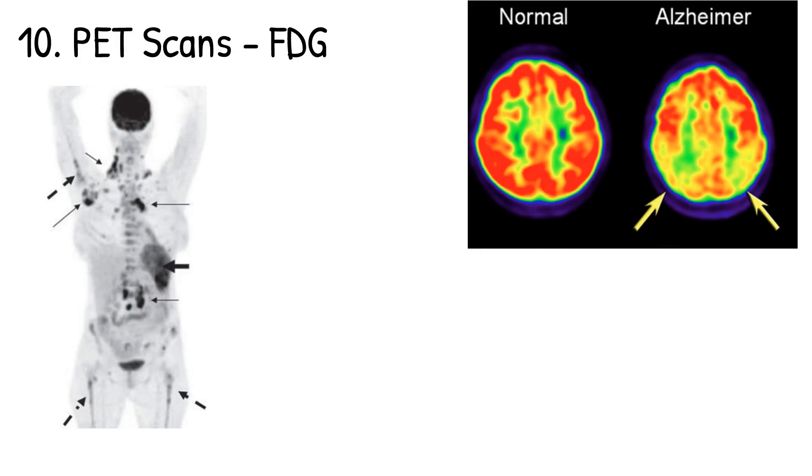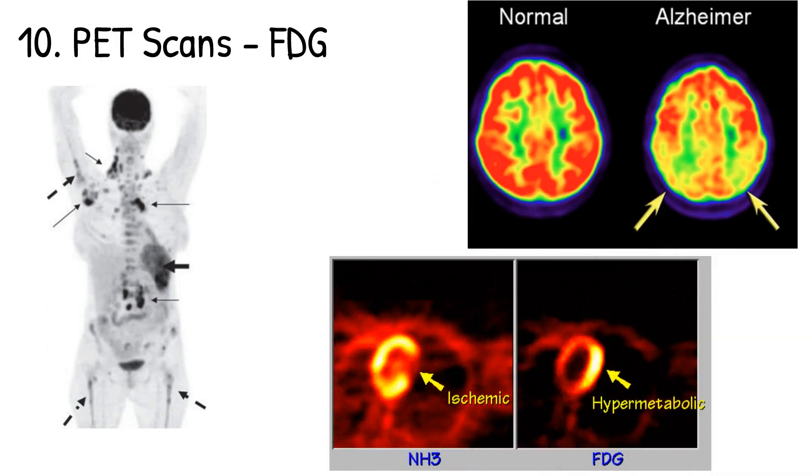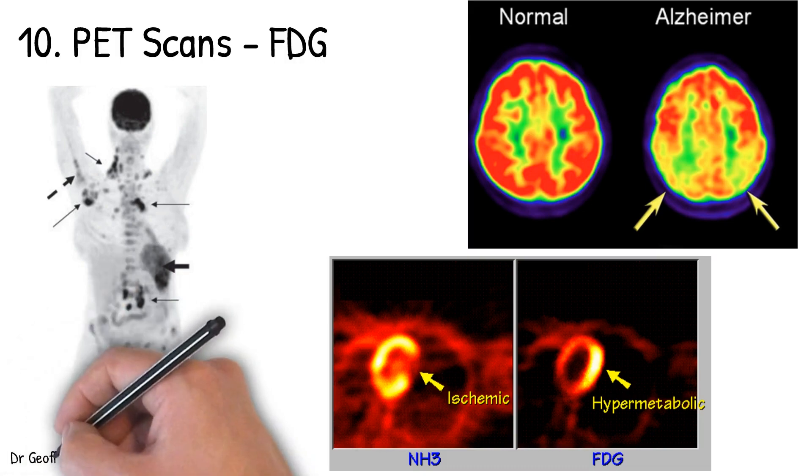And so you can see a whole body scan here with a range of tumors spread to different parts of the body. And of course, it's used in the heart for metabolism when there's severe ischemia. So it actually allows for assessment of myocardial viability.